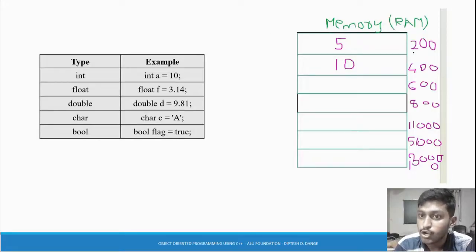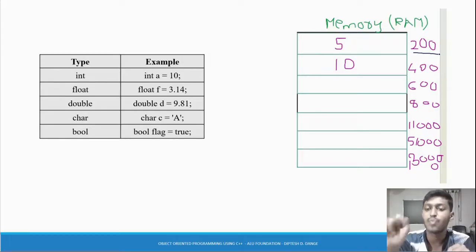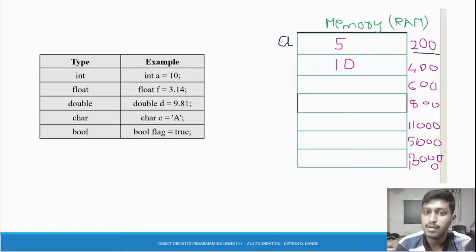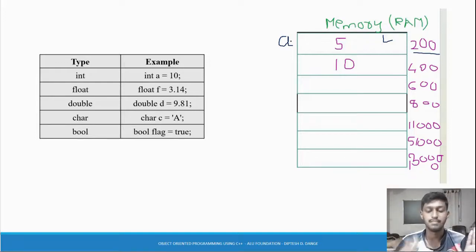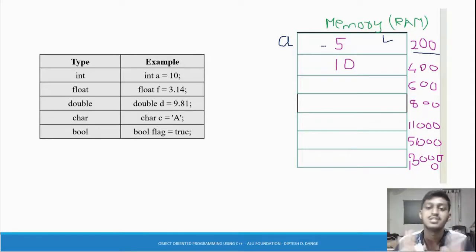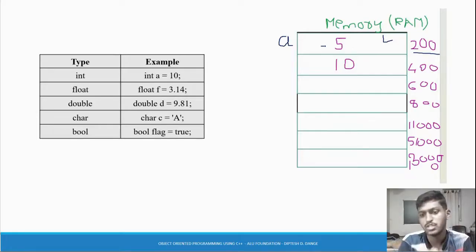Now, what is a variable? A variable is a name given to the memory location. We don't know what the memory address of the first block is - say it's 200 - but we need to represent it and identify it. So we give it a variable name, like 'a'. This memory location is named 'a', and 'a' stores the value 5. Five is an integer, so the data type is integer - the type of data the variable stores.